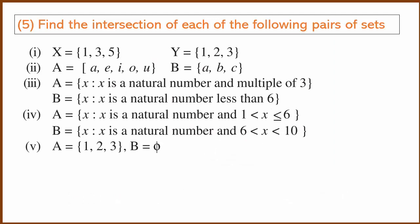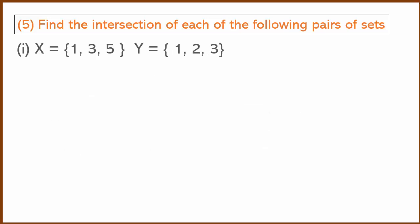Find the intersection of each of the following pairs of sets. The first question involves sets X and Y. Let's draw the Venn diagram with X as one set, Y as another set, and their intersection in the middle.